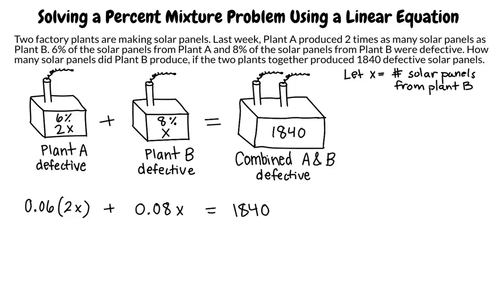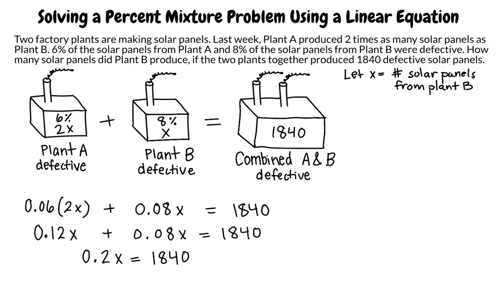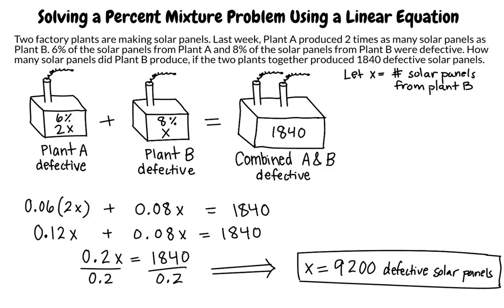The equation is now 0.06 times 2x plus 0.08 times x equals 1840. Multiplying 0.06 times 2x, we write 0.12x. Simplifying the left-hand side, we write 0.2x equals 1840. Dividing both sides by 0.2, we get x equals 9200. This means that plant B produced a total of 9200 solar panels.